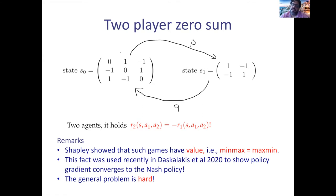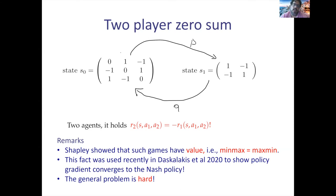This zero-sum version was introduced by Shapley in the 1950s. For this setting, it can be shown that the min-max equals the max-min. This is interesting because in these settings the value functions are not convex-concave. Von Neumann's theorem requires convexity in the minimization argument and concavity in the maximization argument. Here, since the first player's value function is V and the second player's is −V, you effectively have one function, and min-max equals max-min.